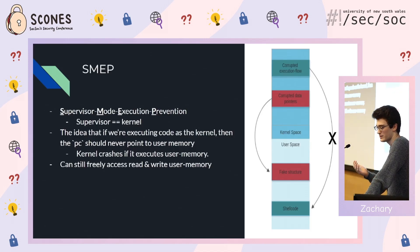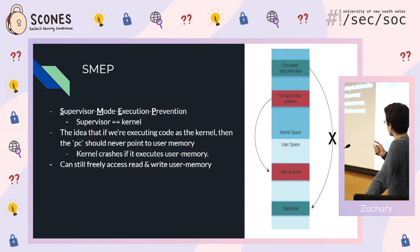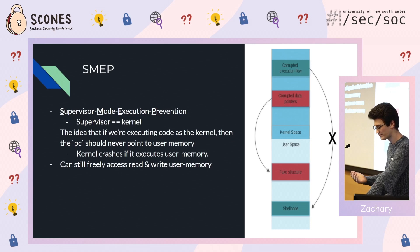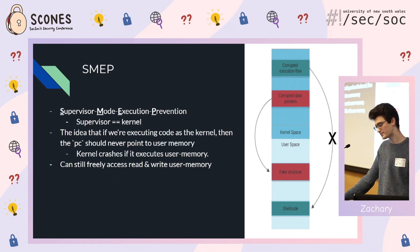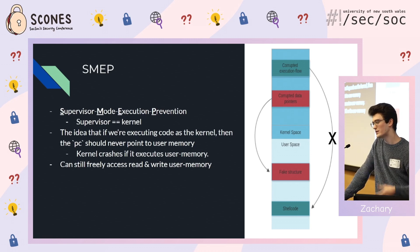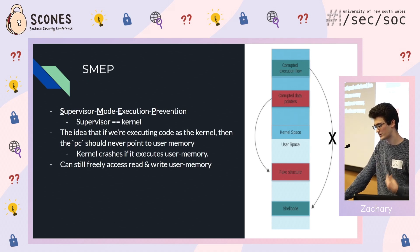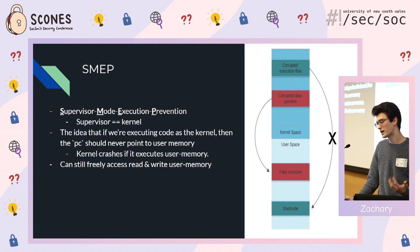The kernel is security-critical, so there are protections against this. One of the main ones is SMEP — Supervisor Mode Execution Prevention. The idea is: if you're executing code as the kernel (supervisor mode), the PC should never point to user memory. This is why user memory (low addresses) and kernel memory (high addresses) have such a clean distinction. Also note that if you crash the kernel, your computer just reboots — so your exploit needs to work correctly. SMEP isn't a complete protection though — we can still freely read and write user memory.